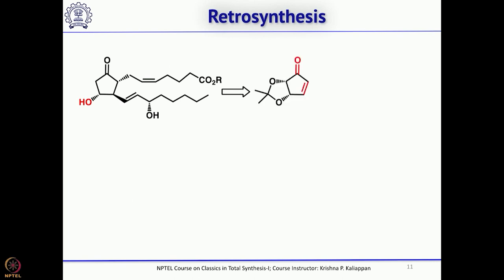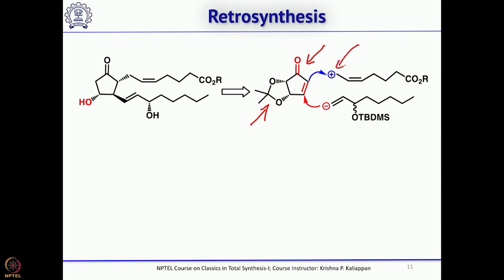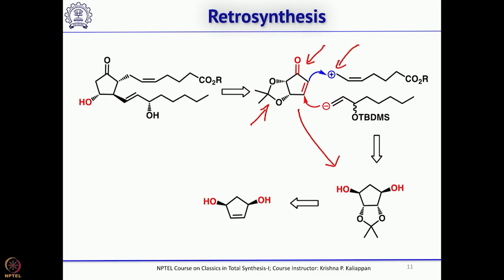What they did was take a substituted cyclopentenone and attach two side chains to it. From a retrosynthetic point of view, this cyclopentenone bearing two protected hydroxyl groups is the key intermediate. A vinyl lithium or vinyl copper species adds to this cyclopentenone in a 1,4-fashion, and the resulting enolate is quenched with an electrophile. The starting material again looks almost the same as what Gilbert Stork used, and it can be obtained from cyclopentadiene.